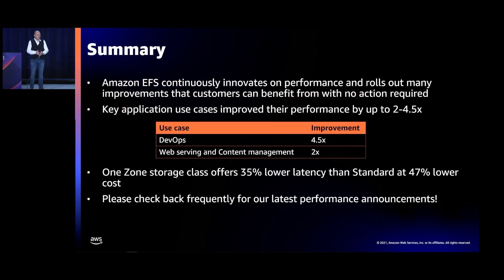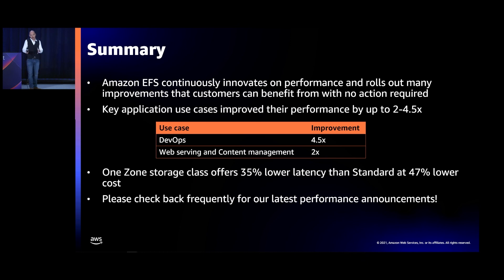In summary: we continuously innovate on performance and roll out many changes that benefit customers. We've improved performance for key use cases by between 2 and 4.5x. The OneZone storage class offers 35% lower latency at 47% lower cost. And please check back frequently — performance is very important to us, we're continuously working on it and have multiple things in the pipeline. So stay tuned. Thank you, and we'll be around here if there are any additional questions.